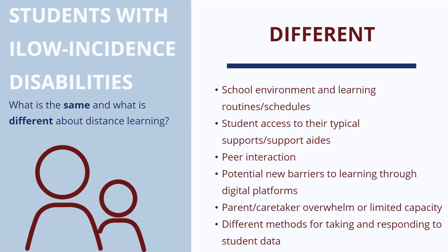So what is actually different? Here are some things that are different about distance learning for students with low incidence disabilities. The school environment is obviously different, and learning routines and schedules are most likely going to be drastically different. Students' access to their typical supports or support aids may be different. Even if students are interacting with their usual paras in this new semester, it's going to be in a different way — through a screen, a phone, or through a family member relaying information. They won't be able to have physical access.